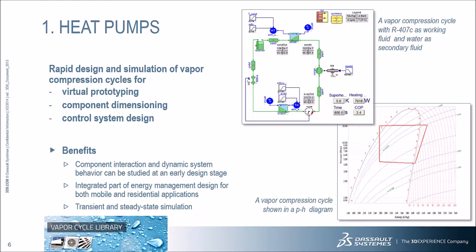Component models for compressors, expansion devices, and heat exchangers can be combined to investigate different architectures at varying levels of detail. Both transient and steady-state operation can be simulated. The system diagram shows a typical vapor compression cycle. The working fluid, here R407C, absorbs heat from a low-temperature heat source, typically ambient air or an available water reservoir. The vapor is first compressed and then condensed at a higher pressure and temperature level, thereby heating the target fluid. In this example, water is used in both the heat sink and source, though the target fluid is easily replaced by air or an incompressible fluid from the liquid cooling library.